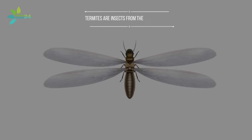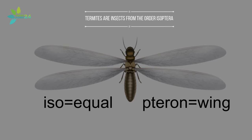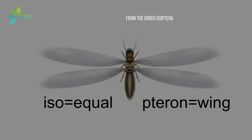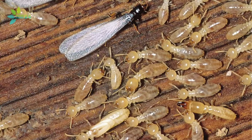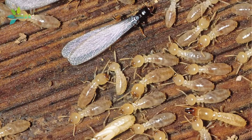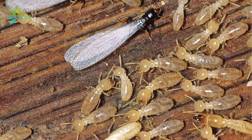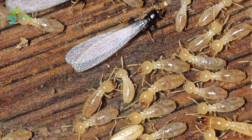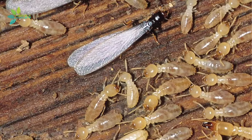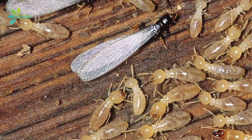Termites are insects from the order Isoptera, the name derived from their equally sized wings — 'iso' meaning equal and 'ptera' meaning wing. The wings, when present, are long, slender, in two pairs, and of similar size and shape. These are usually shed following a short nuptial flight, after which males and females pair up to start a new colony.